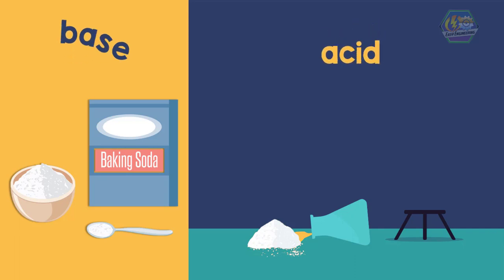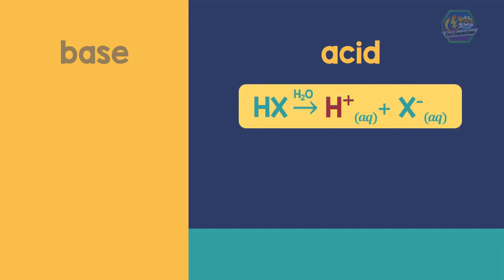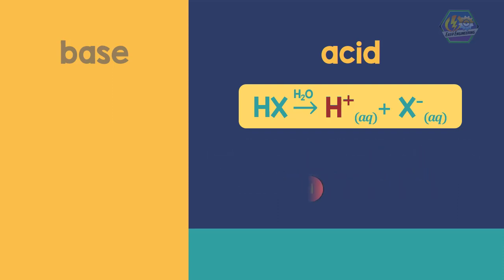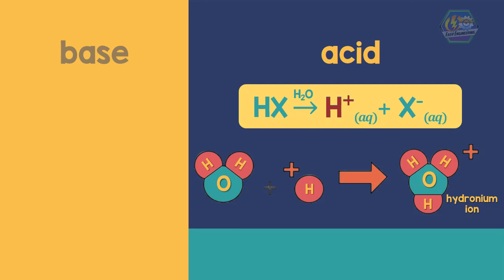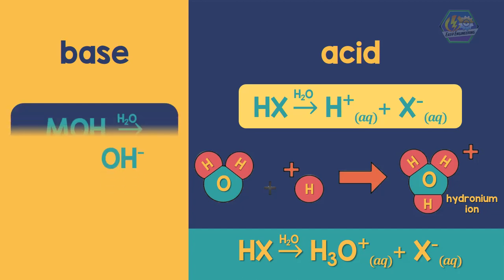You will learn why in this video as we discuss acid and base reactions. An acid dissociates when dissolved in water as hydrogen ions — here is the chemical equation of the dissociation. The hydrogen ion is an unusual species because it is a hydrogen element with no electron, so H+ is merely made up of a proton. The hydrogen is attracted to the negative pole of water (H₂O) and bonds with it, turning from H+ into a hydronium ion. Meanwhile, a base dissociates when dissolved in water as OH⁻ ions.